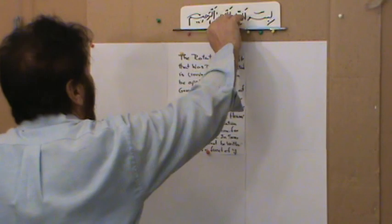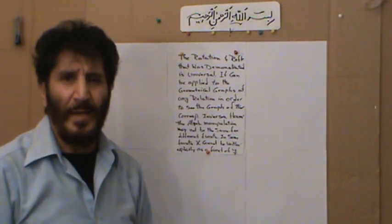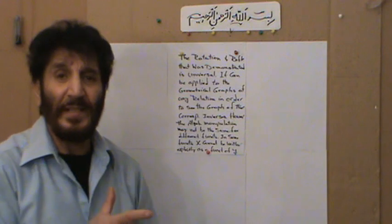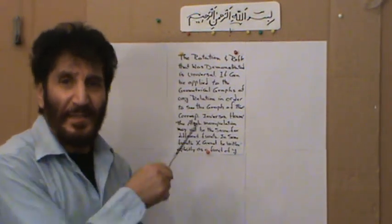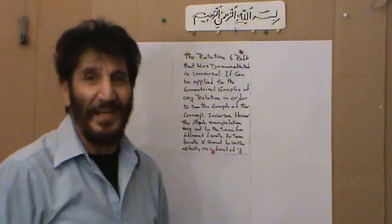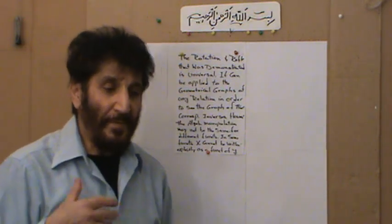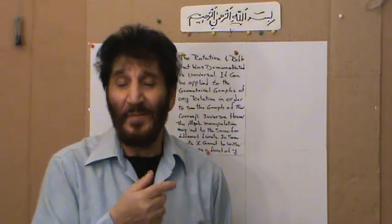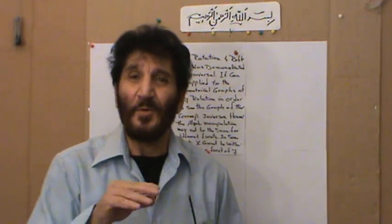This rotation and reflection that I just demonstrated is universal — meaning that for every relation (notice I said relation, not just function, because every function is a relation but not every relation is a function), rotation about the origin followed by reflection about the horizontal axis will give the inverse of that relation. This is 100% guaranteed.